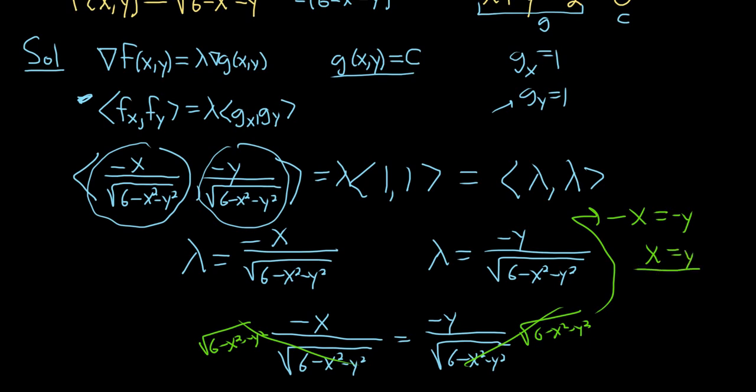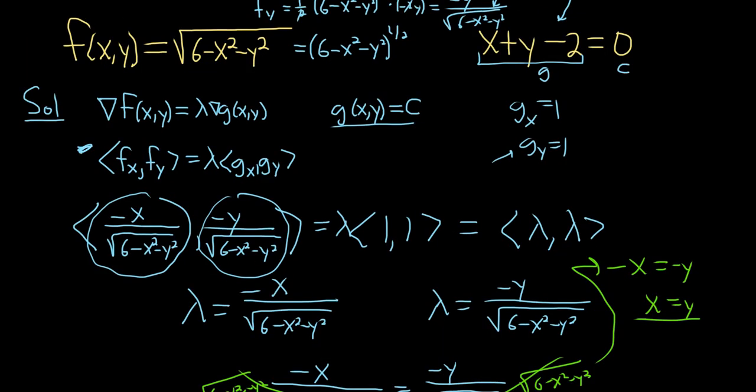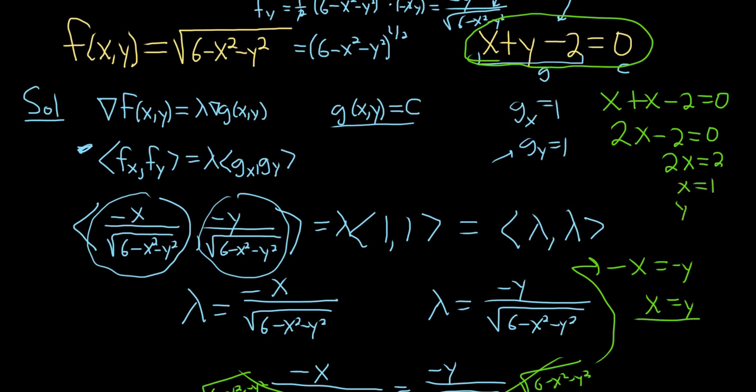So now we're kind of stuck. So what do you do now? Well, usually when you have some relationship between x and y, you go back to your constraint. There's our beautiful constraint right here. So x is equal to y. So we can write this as x plus x minus 2 equals 0. So 2x minus 2 equals 0. So 2x is equal to 2, you add 2. So x is equal to 1. But x is equal to y, so y is equal to 1.